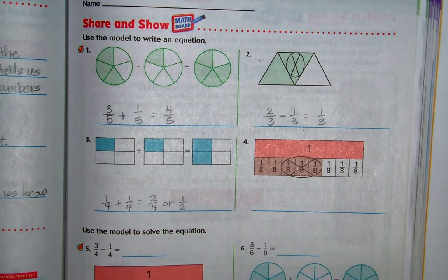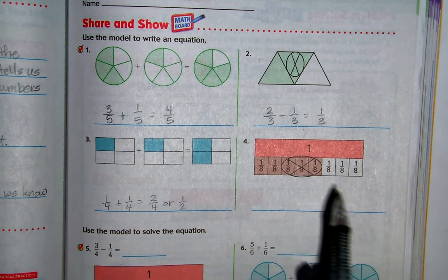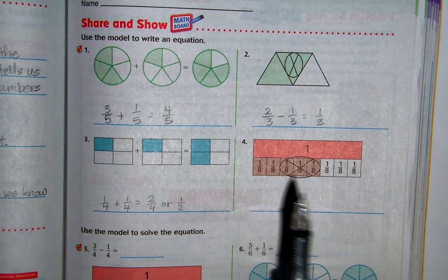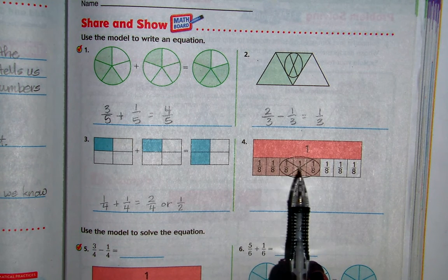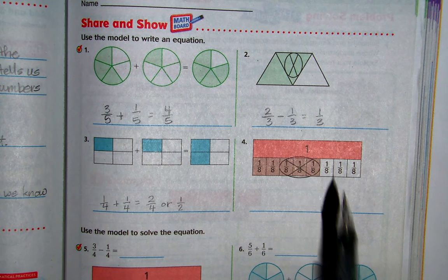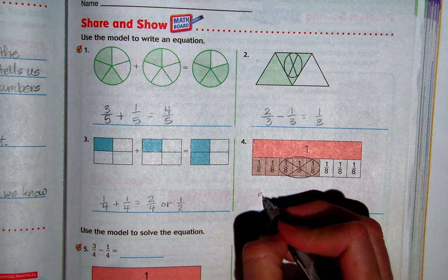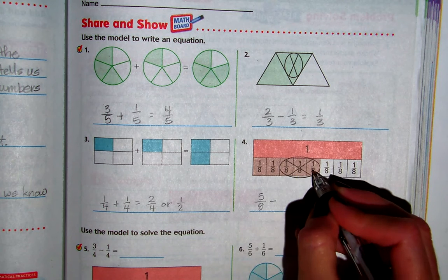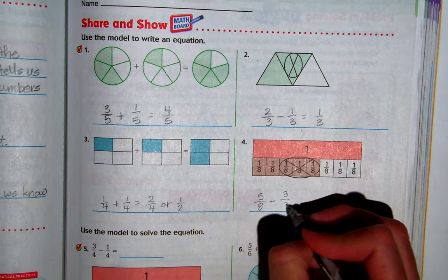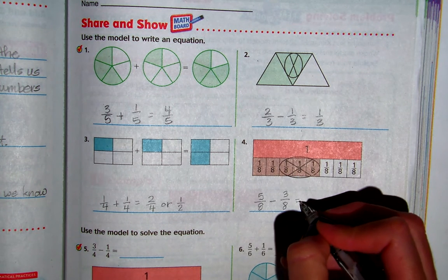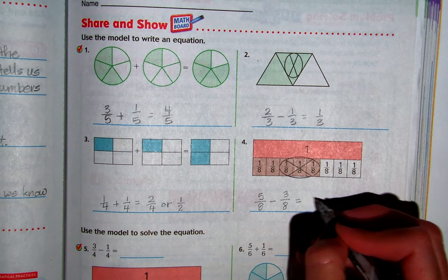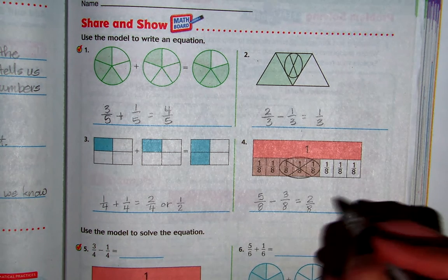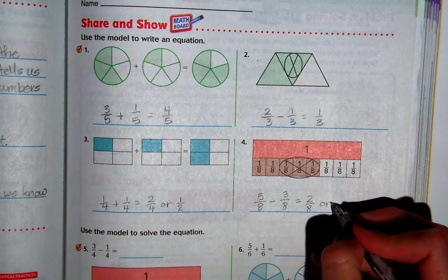Number 4 shows 1, 2, 3, 4, 5 eighths shaded at the beginning. And they are taking away or subtracting 3 eighths, which leaves 2 eighths shaded. And 2 eighths reduced to its lowest form is 1 fourth.